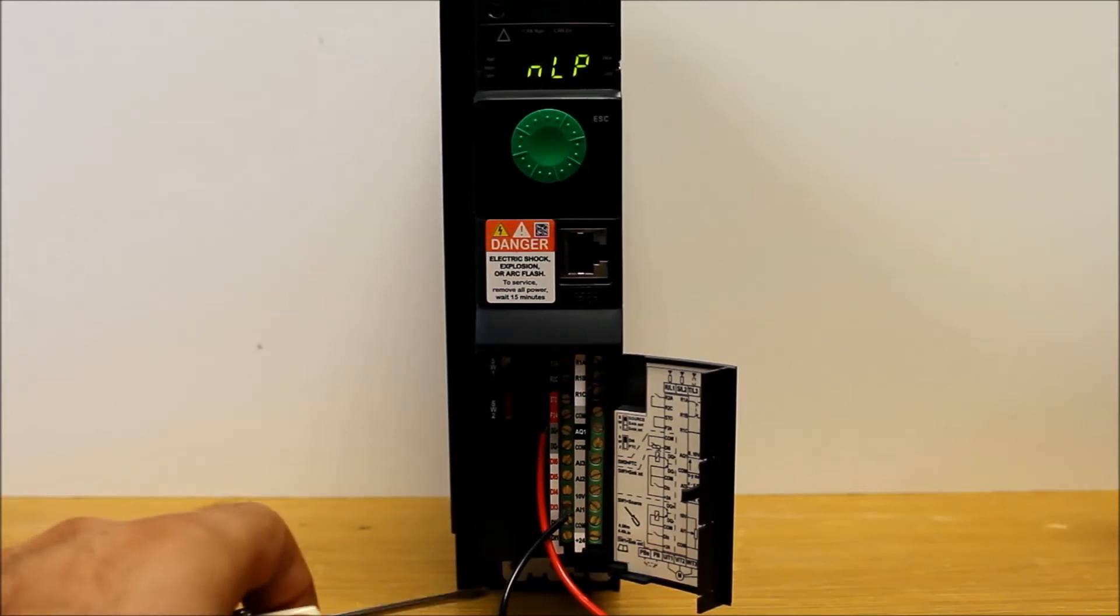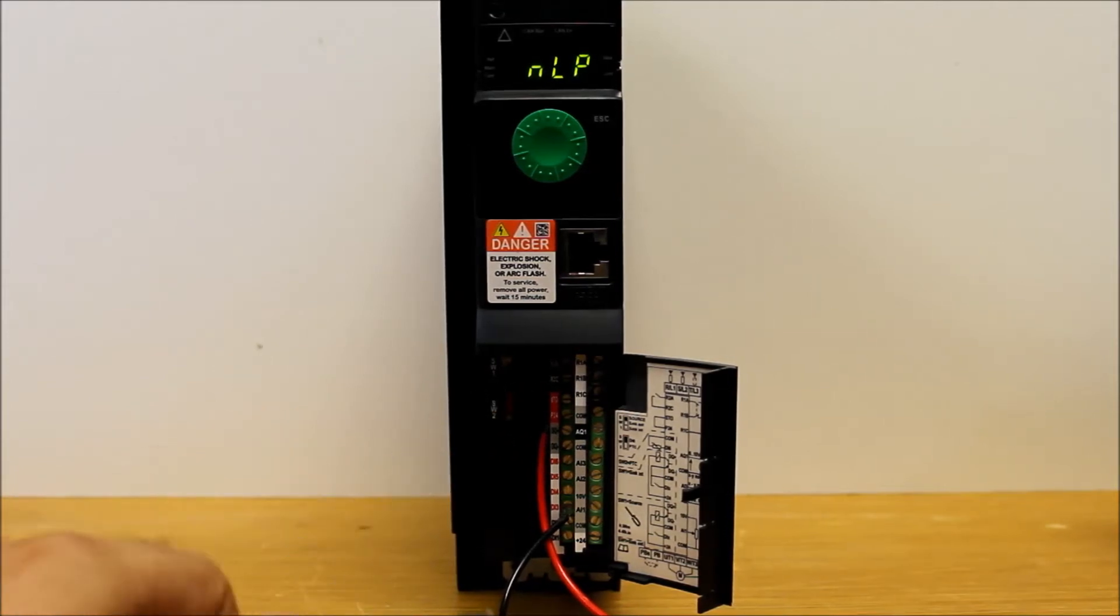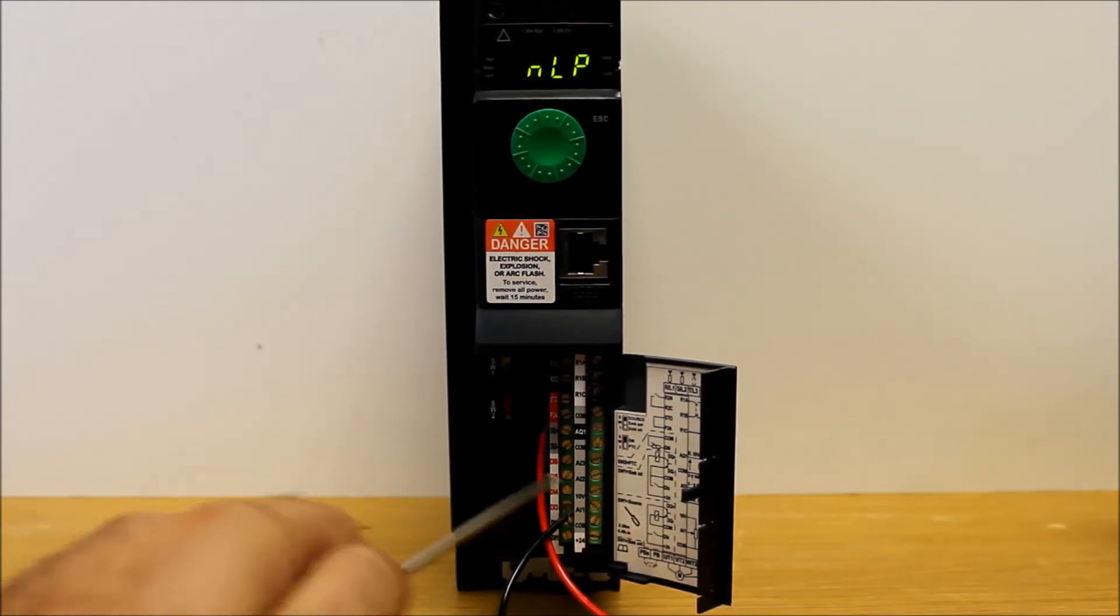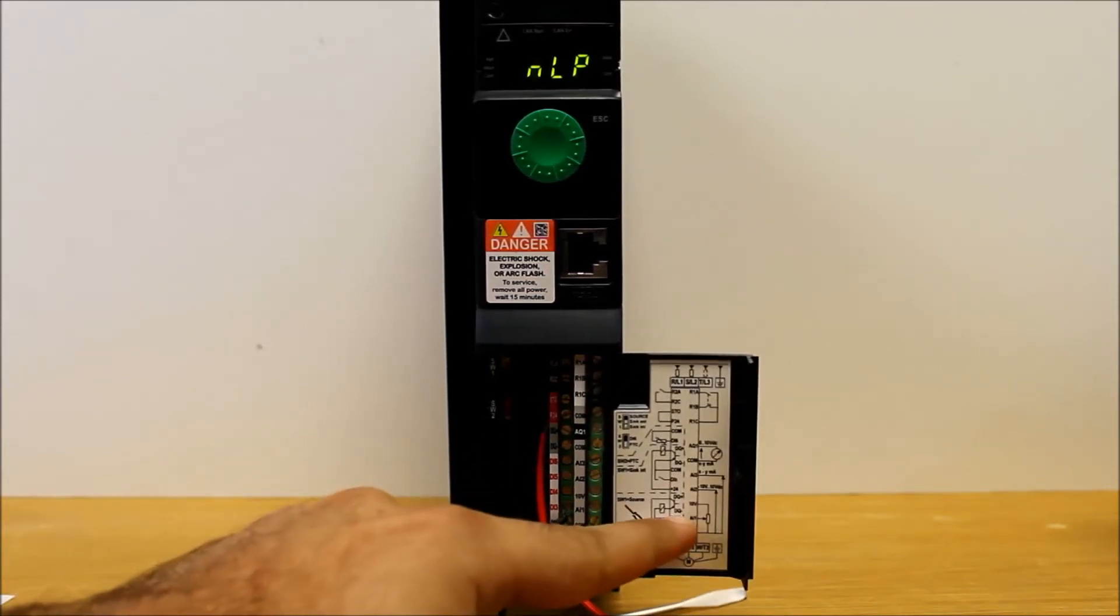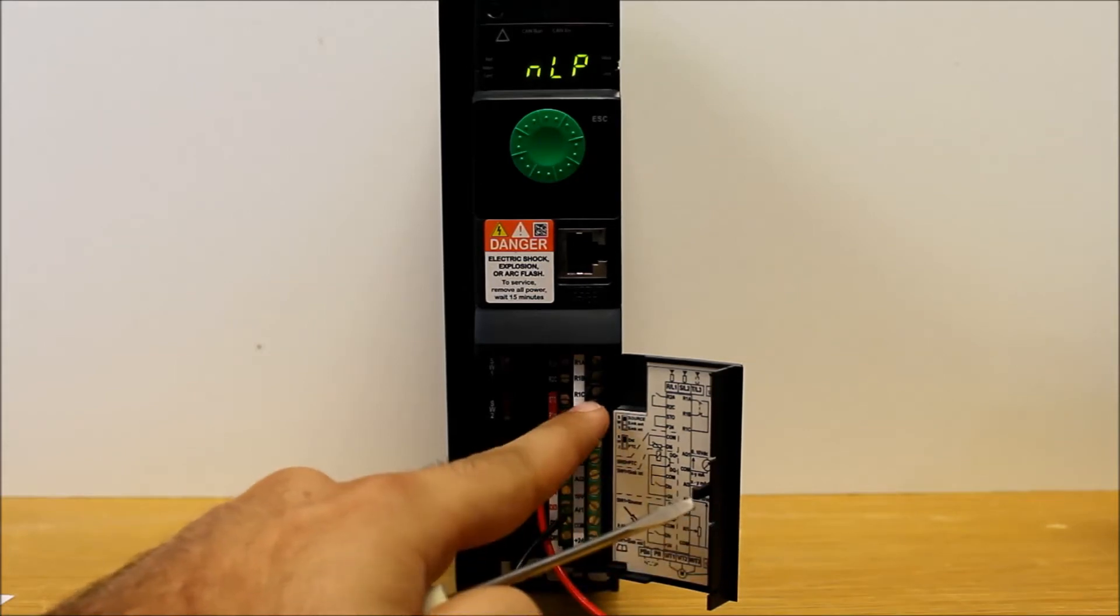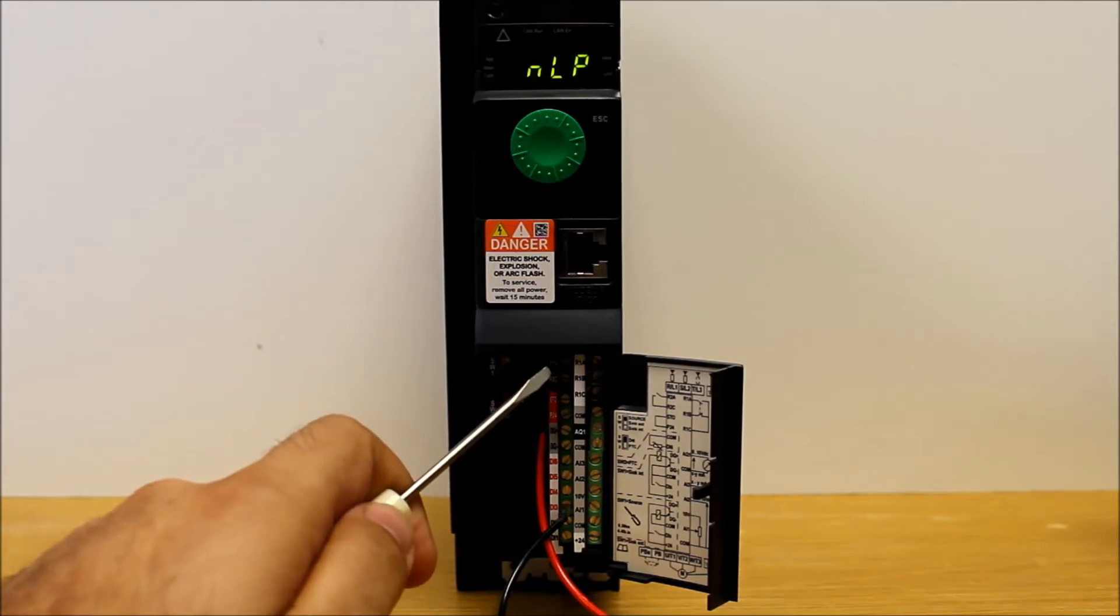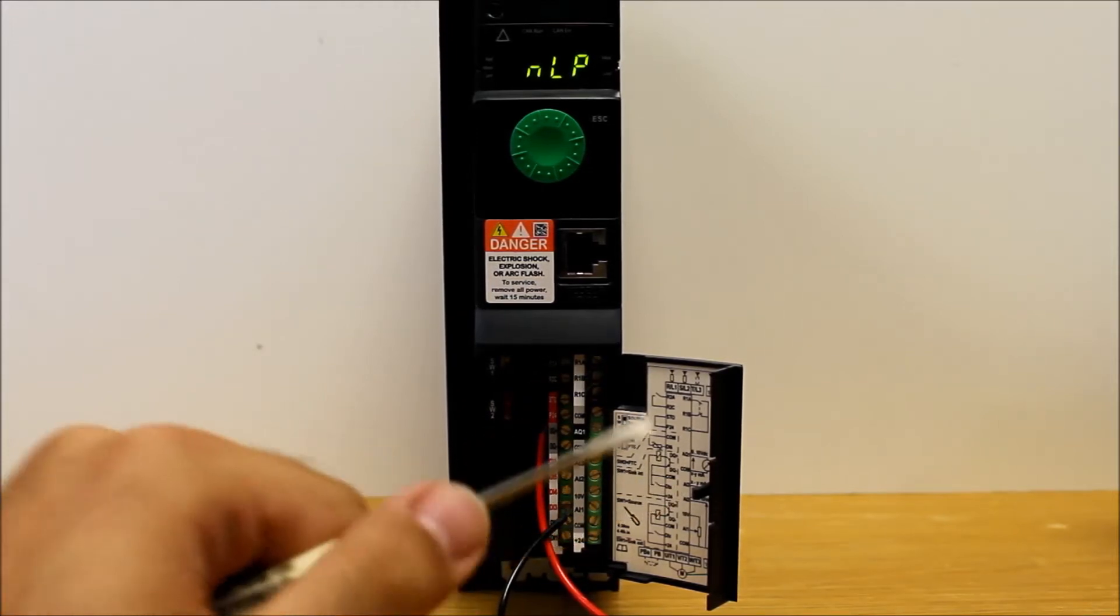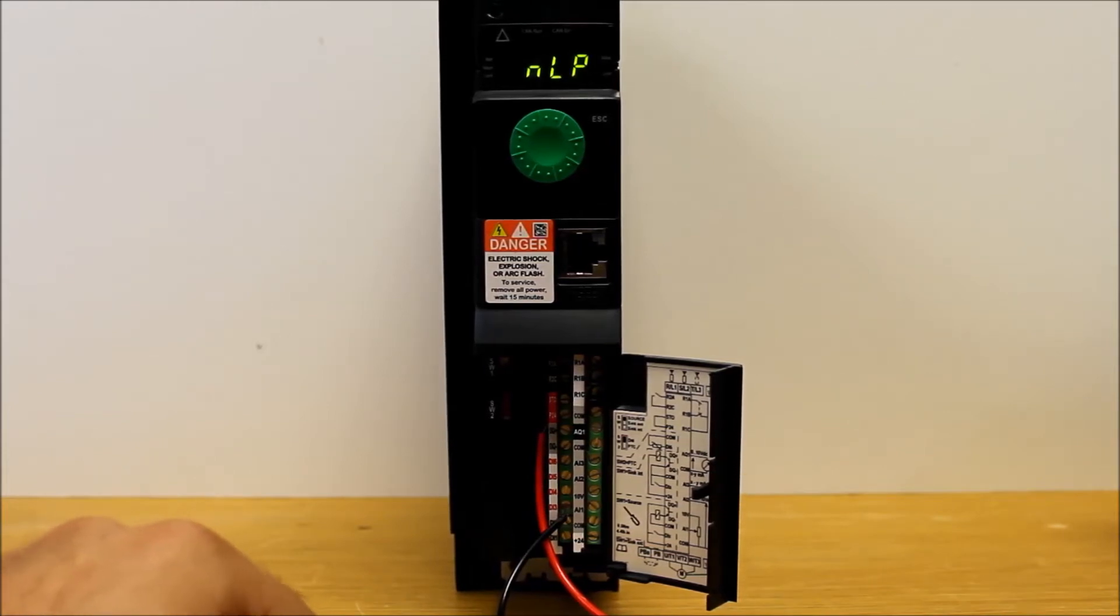Before we get started with the programming, R1 can be a normally closed or a normally open relay. For a normally open, you have terminals R1A and R1C, as you can see right here. You also have R1B and R1C for normally closed. So R1C is always your neutral side. It's a matter of using R1A or R1B, whether you want normally open or normally closed respectively.